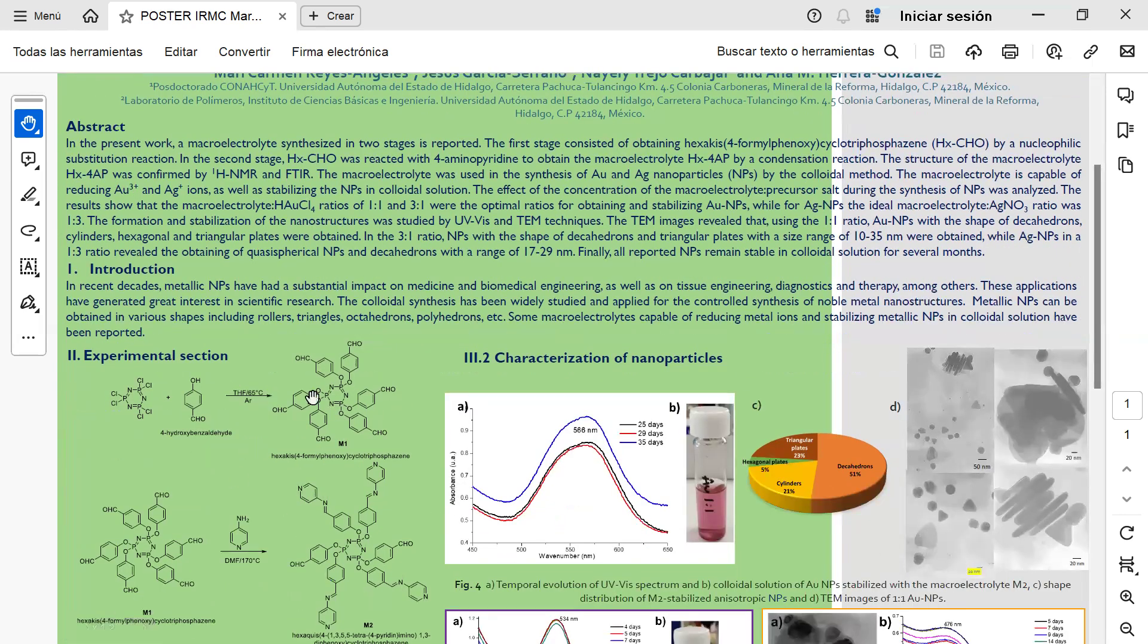The first stage consisted of obtaining hexakis-4-formylphenoxycyclotriphosphazene by nucleophilic substitution reaction. In the second stage, this compound, M1, was reacted with 4-aminopyridine to obtain the macroelectrolyte X-4-AP by condensation reaction.